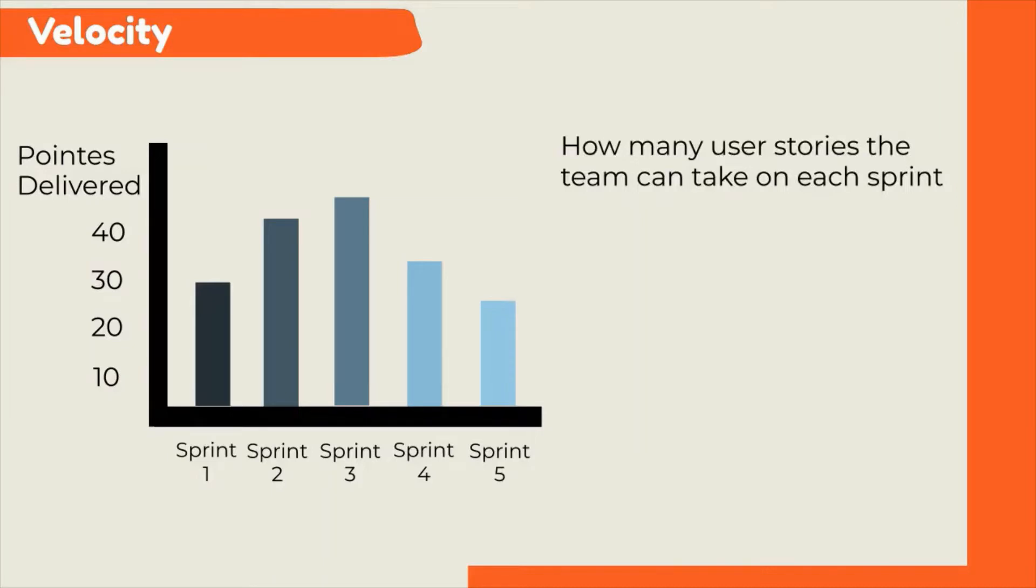Tracking the team's velocity helps predict the team's capacity for upcoming sprints. By experience, teams take three to four iterations to find their stable velocity. Tracking your team's velocity helps you turn your estimation units into actual time and cost for the business.